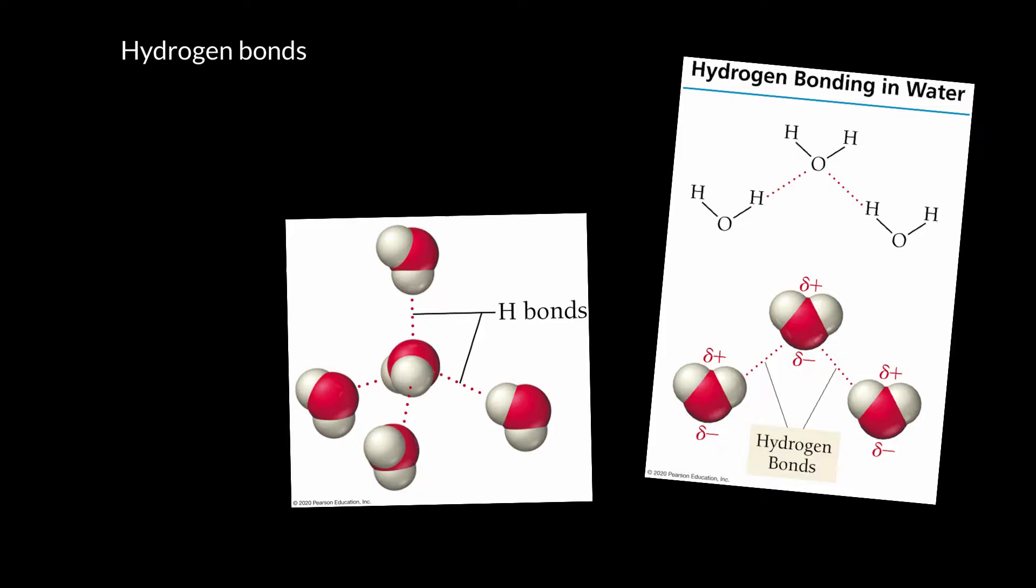Hey, welcome back. Water is a classic example of a hydrogen bonding compound. In fact, water's really got it made because it's got the ability to donate two hydrogen bonds and the ability to receive two hydrogen bonds.